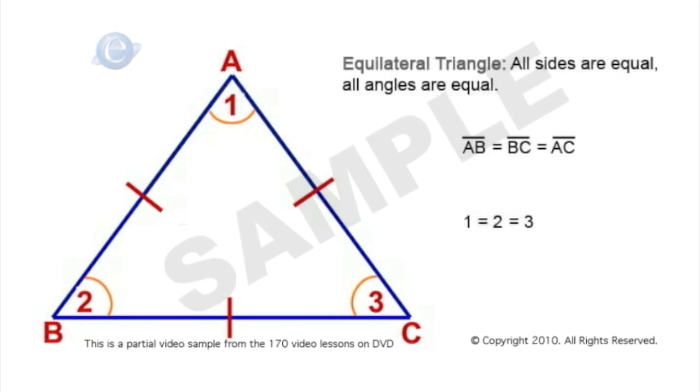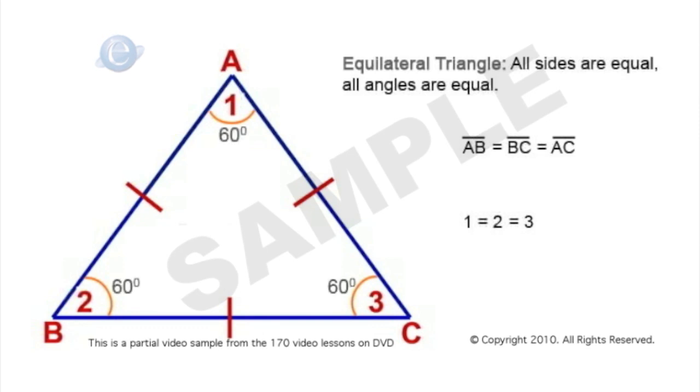And in fact, since we know all three of those angles are the same and they add up to be 180, then each angle would be equal to 60 degrees.